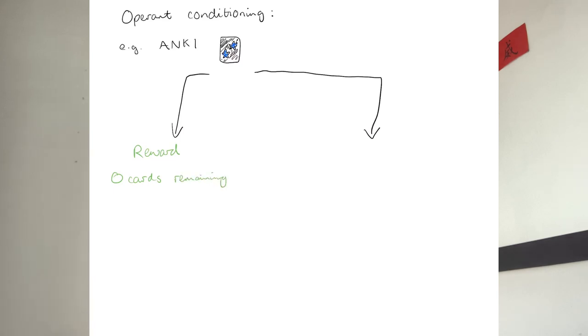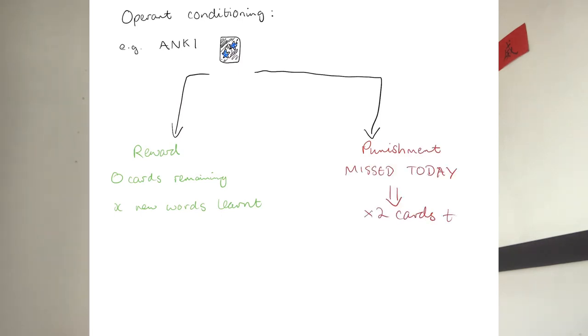In this part of the video we're going to go into a bit of psychology. There are two important theories useful to understand in habit learning. The first is operant conditioning — the idea that we learn to do a habit as a result of the rewards and punishments involved. For example, I do my Anki partly because I enjoy the satisfaction of seeing no new cards due today. But there are also punishments — if I miss one day I'm going to have to do double the amount of cards the next day, and I don't want that. So that punishment keeps the habit going.